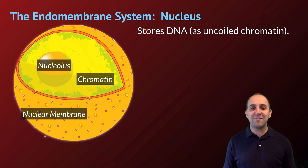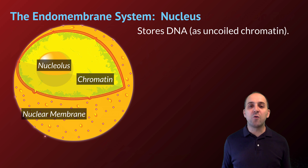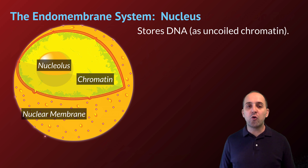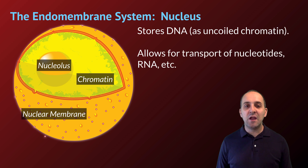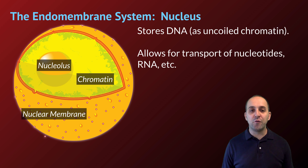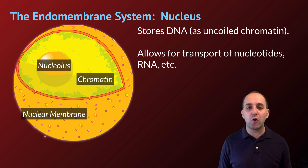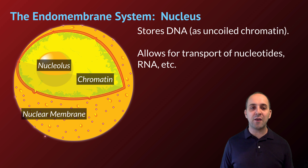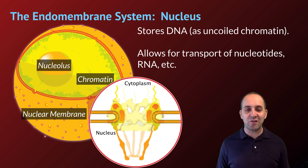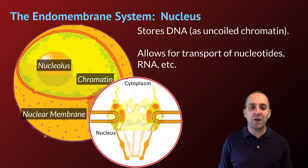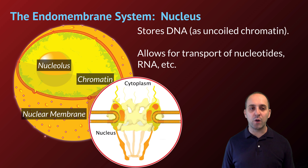The nucleus is the organelle that stores DNA. Inside of the nucleus the DNA is kept as uncoiled chromatin, as you can see represented in the image here. The nuclear membrane allows for the transport of nucleotides, RNA, and other materials in and out. There are a series of pore complexes that span throughout the entirety of the nuclear membrane and allow for that transport to occur.